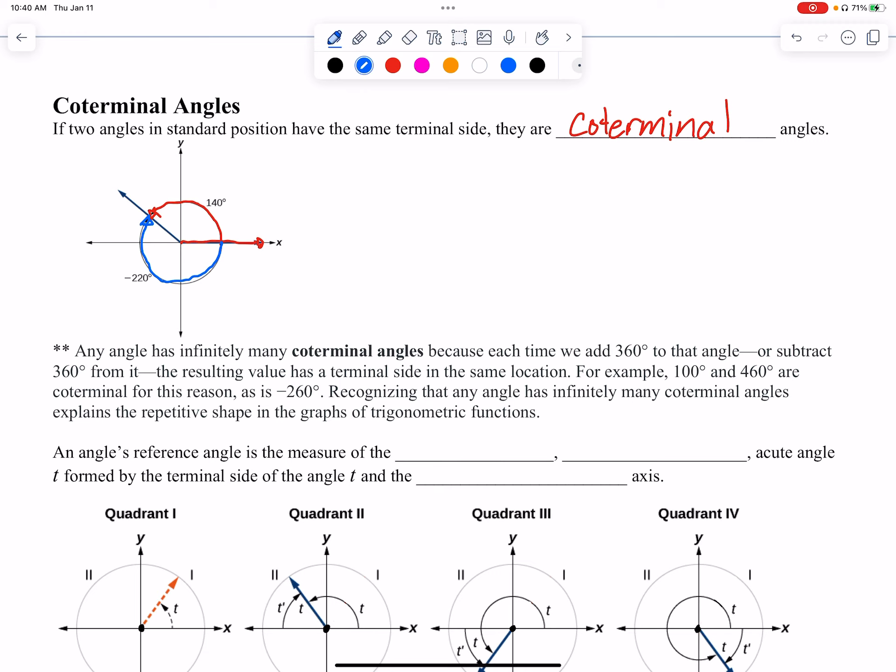I could also, let me draw another axis here, coordinate plane. I could also do this. I could go all the way around and then land there, and what that would be, that would be 140°, but I went all the way around, so I would add 360° to it. So this angle actually is 500°, right?